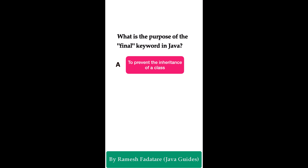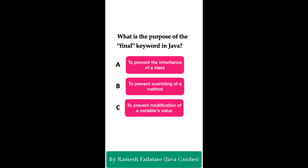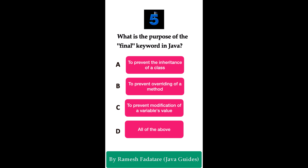The final keyword serves three purposes: once a class is declared final it cannot be extended; once a method is declared final it cannot be overridden in a subclass; and once a member variable is declared final its value cannot be modified or reassigned. So the final keyword prevents inheritance of a class, prevents overriding of a method, and prevents modification of a variable's value.